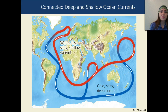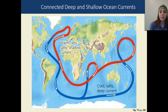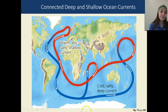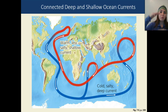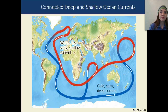This diagram shows the connected deep and shallow ocean currents. Warm currents are shown in red and occur near the surface, while cold currents are shown in blue and occur much deeper. The deeper the current, typically the colder it will be.